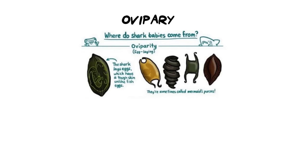Now we're going to look at what happens after fertilization — do we lay an egg or give birth to live young? I'm going to use sharks as my example because they actually fall into all three categories. There are species that are oviparous, ovoviviparous, and viviparous. I know the words are very similar but we'll unpack each of them, and I'll use sharks as a uniform example throughout.